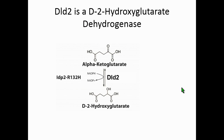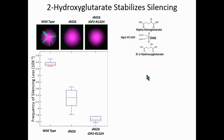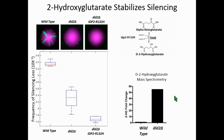The next thing I wanted to ask was whether other mutations proposed to increase D2-hydroxyglutarate levels in the cell would have a similar phenotype. It turns out that yeast have a D2-hydroxyglutarate dehydrogenase; in yeast it's called DLD2. When I mutated DLD2, I saw the same effect—a decrease in the number of GFP events, or an increase in the stability of silencing. This mass spec measurement of D2-hydroxyglutarate shows a substantial increase in the level of this metabolite in these mutations.